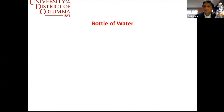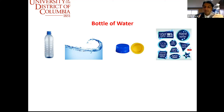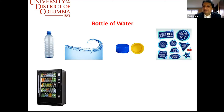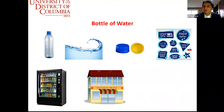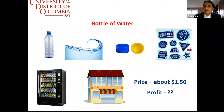Where do you buy a bottle of water? Either from a vending machine — maybe at UDC or an airport — or from a grocery store. The price is about $1.50, depending on where you're buying it. At a vending machine it might be 99 cents, at the airport maybe $2.50, and if you buy a whole pack of 24 bottles it works out much cheaper. So what do you think the profit on a bottle of water is? Anyone?